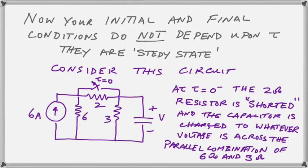So the T equals 0 minus is going to be the condition that exists just before we open the switch. Now if the 2 ohm resistor is shorted out then the 6 and 3 ohm resistors are in parallel. That should become obvious. And the capacitor is going to be charged to whatever voltage is across that parallel combination. Because we have allowed the circuit to reach steady state before opening that switch. So that means that the current into the capacitor is 0 and all we have to do is work out the voltage across the parallel combination of 6 ohms and 3 ohms.